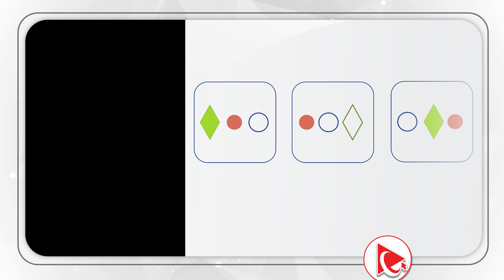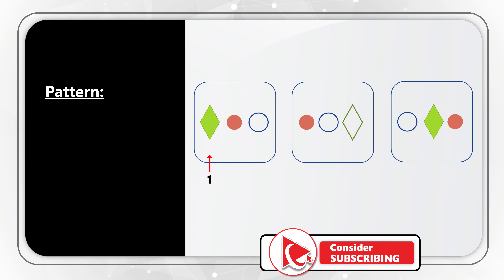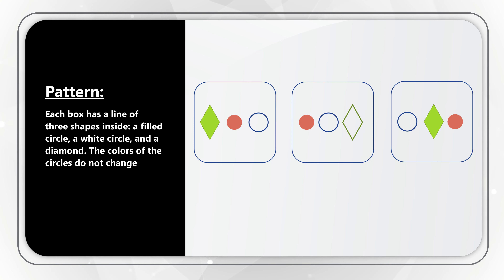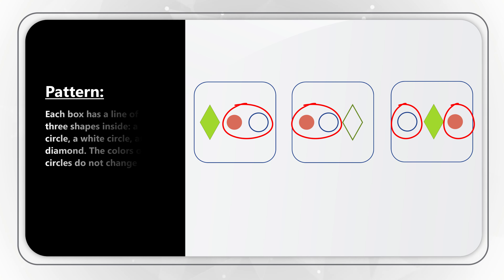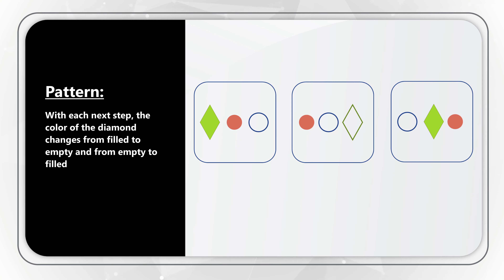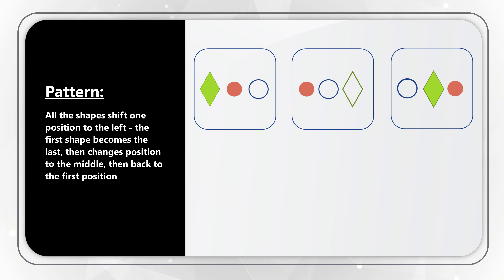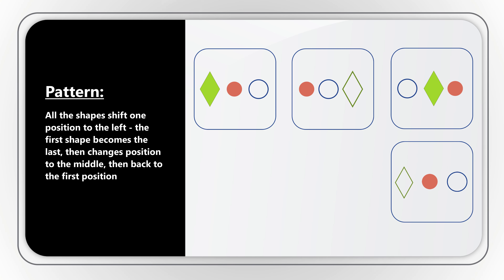If you look closely at the shapes inside each square, each shape has a position 1, 2, and 3 going left to right. There are three different shapes: a filled circle, a white circle, and a diamond. The colors of the circles do not change, but the color of the diamond alternates from filled to empty and back. All shapes shift one position to the left — the first shape becomes the last, then moves to the middle, then back to first. Using these patterns, the answer here is choice B.